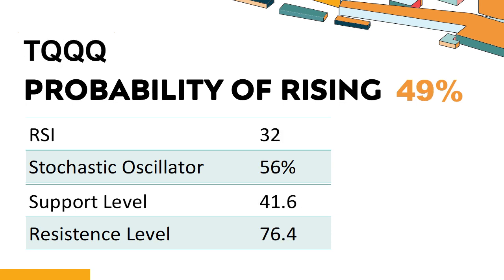What technical signals should you look for when analyzing TQQQ? TQQQ's 14-Day Relative Strength Index (RSI) value was 32. When the RSI is above 25 and below 50, it generally indicates that the stock is moderately bearish. This means the security's price has been falling but has not yet reached oversold levels, typically an RSI reading of 25 or lower. The current stochastic oscillator of TQQQ is 56%.